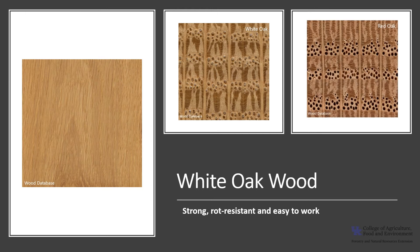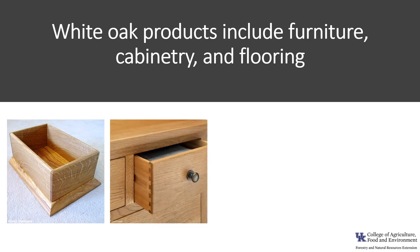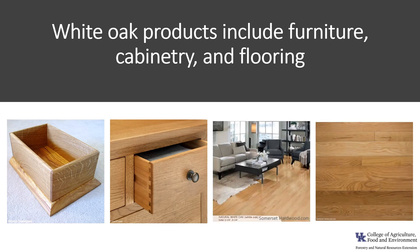In white oak, these pores are filled with tyloses, which makes the wood desirable for use in making barrels that contain liquid because it will not leak out. However, the pores in red oaks are open, which is a good characteristic to help you identify red oak wood from white oak wood. White oak is commercially a very important wood. It is used for furniture, cabinetry, veneer, paneling, and flooring—you probably have some type of white oak product in your own home.